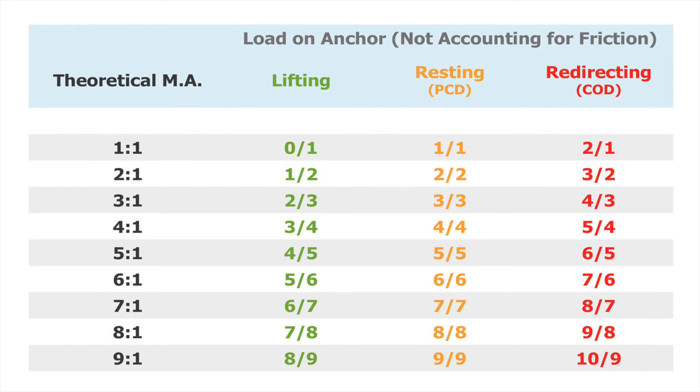So, if your mechanical advantage is 2 to 1, use 2 as the denominator. While lifting up on the rope, the load on the anchor will be 1/2. While resting, the load on the anchor will be 2/2. Using a change of direction and pulling down on the rope, the load on the anchor will be 3/2, and so on.